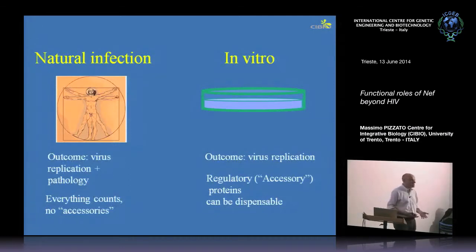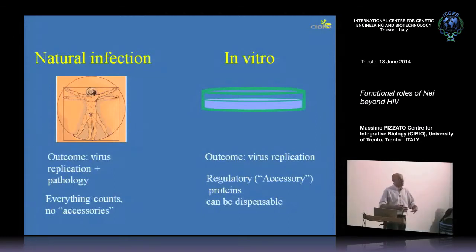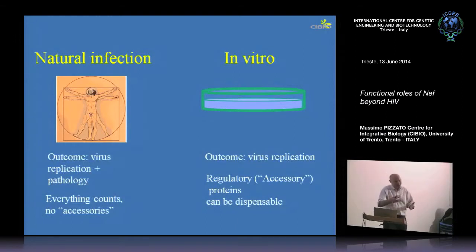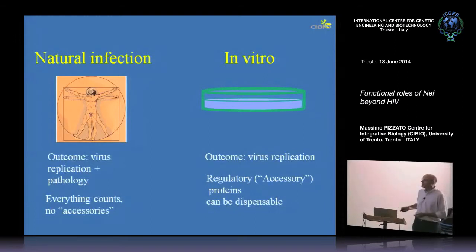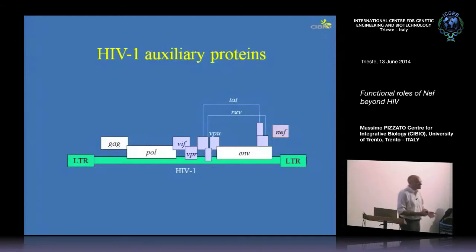The trick is that there are situations in vitro that make the deletion suddenly evident. There are cell lines that lack some host factors, or that differentially express host factors that make this difference visible. So let's call them auxiliary proteins instead of accessory proteins — because you wouldn't imagine that the virus keeps something it doesn't need.